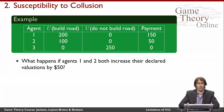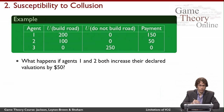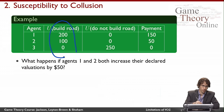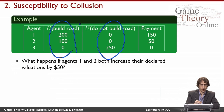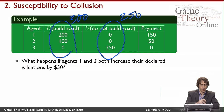Here's something a little bit more subtle about VCG: it turns out to be susceptible to collusion. So let's look at the road building game. Here we have three agents. We're going to choose to build the road rather than not building it, because we get utility of $300 for building the road and $250 for not building it.